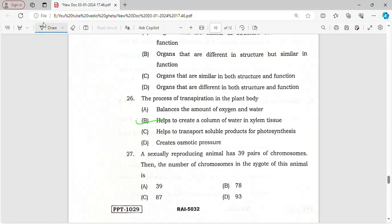A sexually reproducing animal has 39 pairs of chromosomes. Number of chromosomes in the zygote - obviously if the organism is having 39 pairs, the zygote should have 39 pairs. Their gametes will be having only 39, not 39 pairs. After fertilization, the zygote which is forming has 39 pairs.